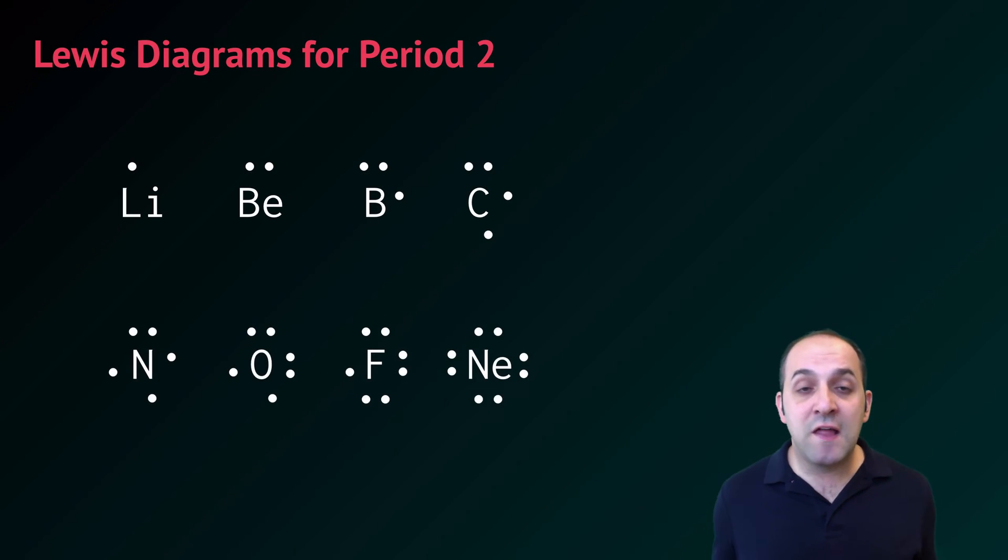Here they are. In each case, I've taken the element symbol and represented the number of valence electrons as dots around it. Starting at lithium, we have one dot, then we increase by one dot as we go through the period, ending with neon which has eight dots. That's how we do Lewis dot diagrams.